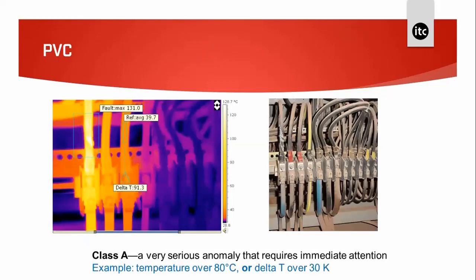In this case with PVC cable where the sleeving is burned off, we can see that gas ignited and damaged the insulation in the middle of the cable. The delta T in this image is 91.3°C, which pushes this into a Class A situation straight away.